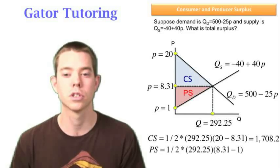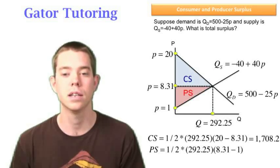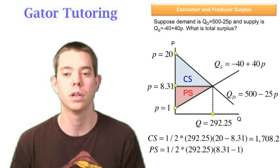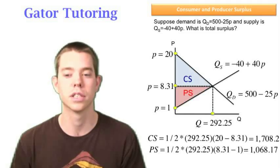Producer surplus is one half base times height, the base is the same, 292.25, and the height is the difference between 8.31 and $1.00. So when I solve that, I get 1,068.17.